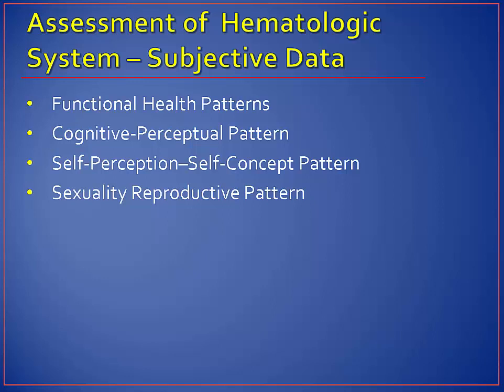Functional health patterns can include assessing the urinary output, diarrhea, blood in the urine, stool, and history of black tarry stools, recent heme occult, or colonoscopy. Assess for symptoms of tiredness, weakness, complaints of heavy extremities. Also assess for apathy, malaise, dyspnea, or palpitations.